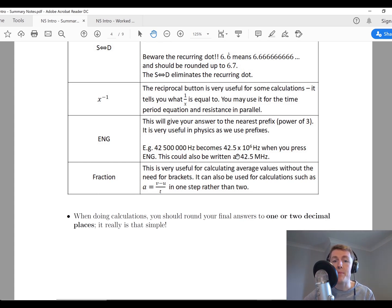For example, if you had an answer of 42 million 500,000 hertz, this would become 42.5 times 10 to the 6 hertz when you press the ENG button. And then you could write that in the final answer as 42.5 megahertz. You don't have to do that though, and you can just leave answers in their full hertz form, for example.